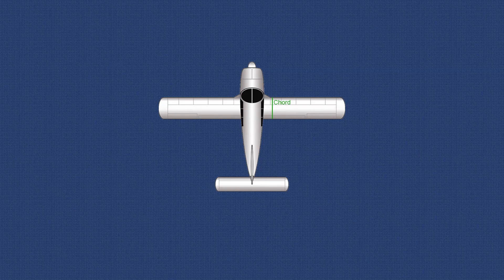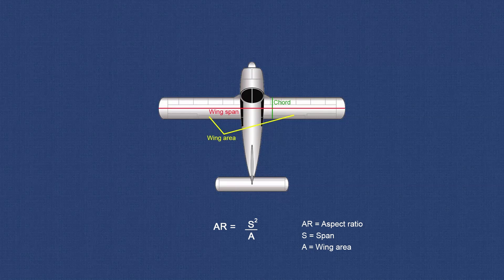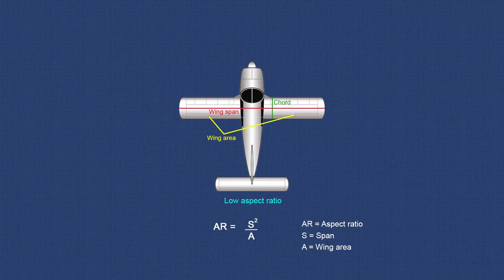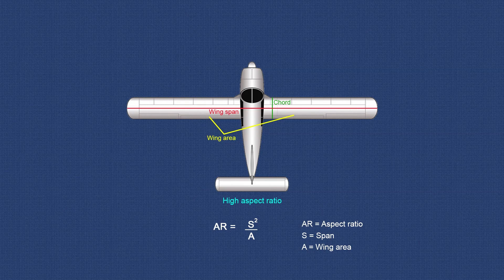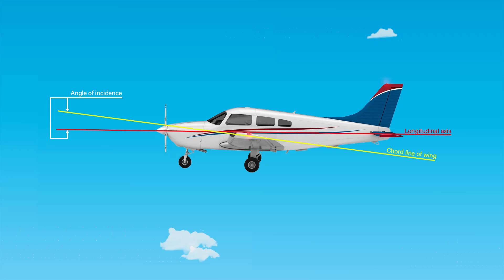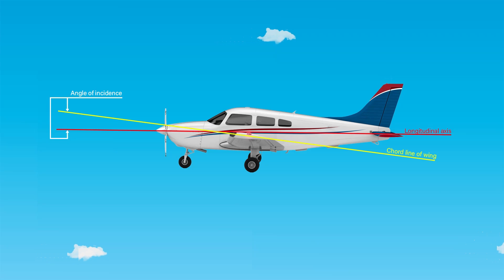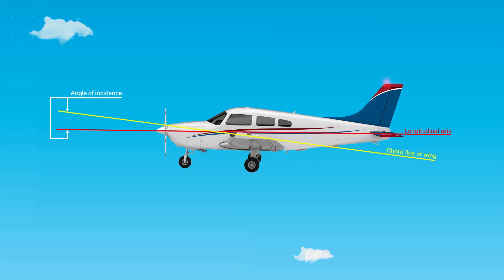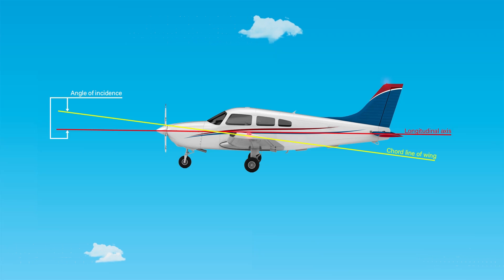It is also known that the larger the wingspan as compared to the chord, the greater the lift obtained. This comparison is called aspect ratio — the higher the aspect ratio, the greater the lift. In spite of the benefits from an increase in aspect ratio, definite limitations are defined by structural and drag considerations. The acute angle the wing chord makes with the longitudinal axis of the aircraft is called the angle of incidence, or the angle of wing setting. This angle is in most cases a fixed, built-in angle. When the leading edge of the wing is higher than the trailing edge, the angle of incidence is said to be positive; it is negative when the leading edge is lower than the trailing edge.